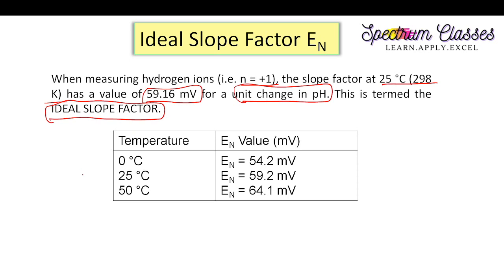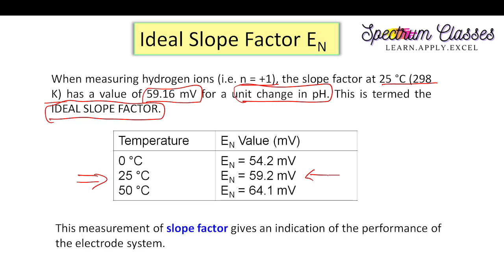The value of the ideal slope factor E_n is given as 59.2 millivolts. This slope factor measurement gives an indication of the performance of the electrode system.